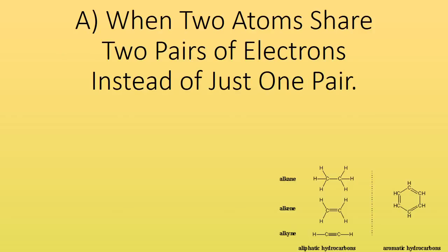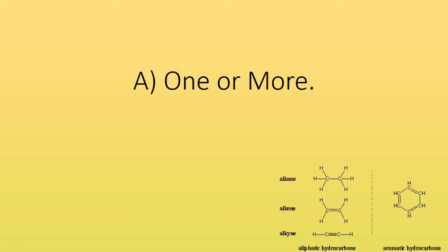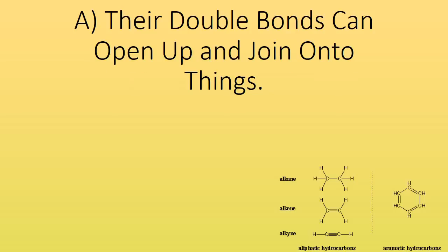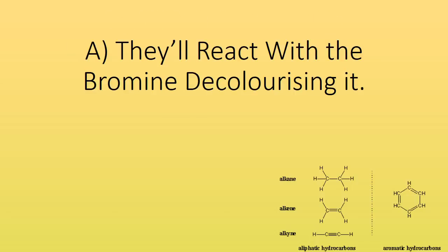How are double covalent bonds formed? When two atoms share two pairs of electrons instead of just one pair. How many double bonds do alkenes have between carbon atoms? One or more. How are alkenes more reactive than alkanes? Their double bonds can open up and join onto things. What happens to bromine water if there are any double bonds around? They'll react with the bromine, decolorising it.